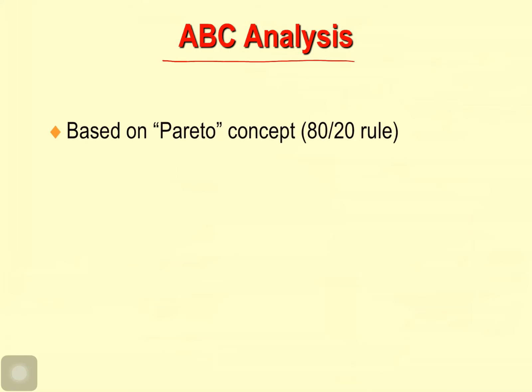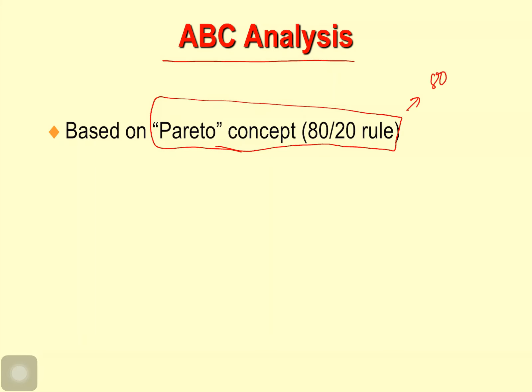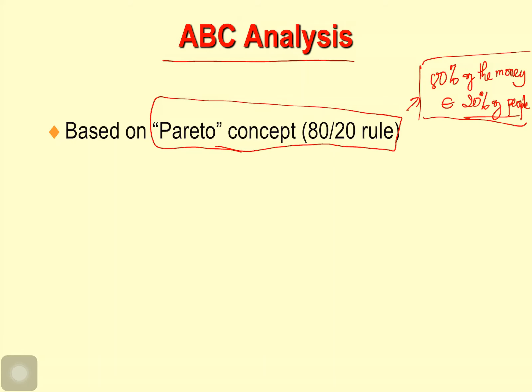How do we categorize and classify different inventory — which products should we keep more of and which less? We use ABC analysis. ABC analysis is based on the Pareto concept, the 80/20 rule. It's like 80% of the money in the world belongs to 20% of people. The same concept applies to keeping inventory — we classify products as A level, B level, and C level.